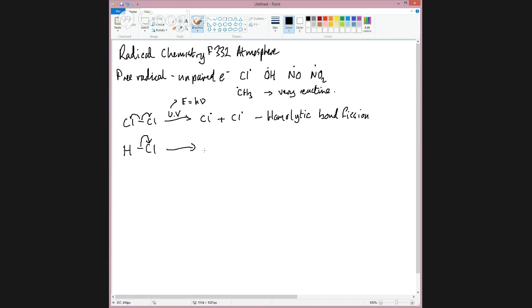This happens in aqueous solution, for example. What we get is not radicals, but ions. So we get a hydrogen ion, H+, and a chloride ion, Cl-, so the chlorine's gained an electron, and the hydrogen's lost the electron. And that uneven splitting of bond is called heterolytic fission.